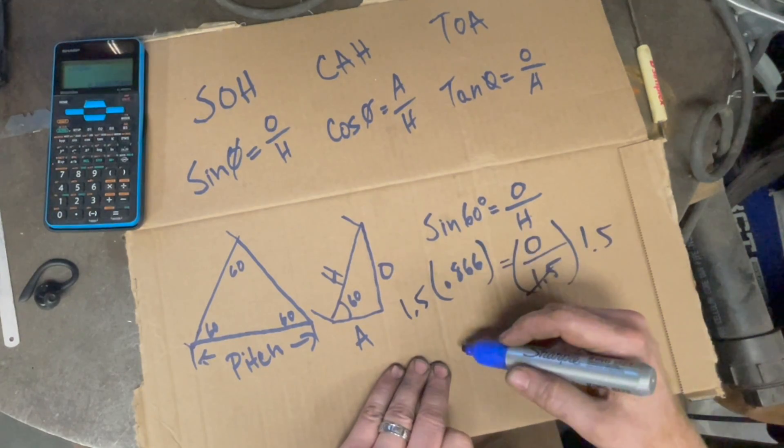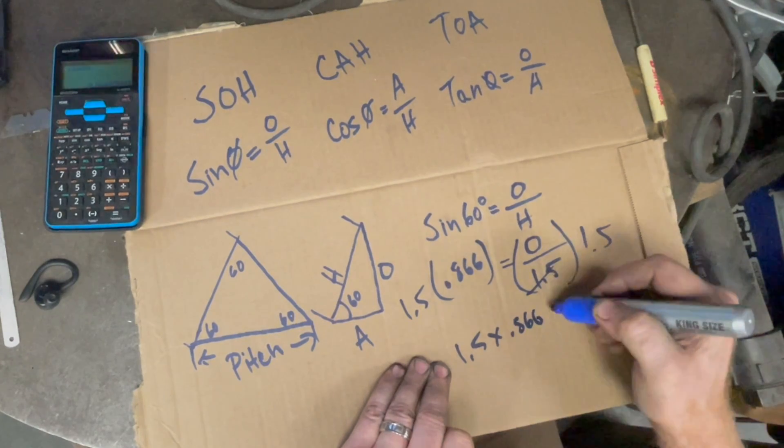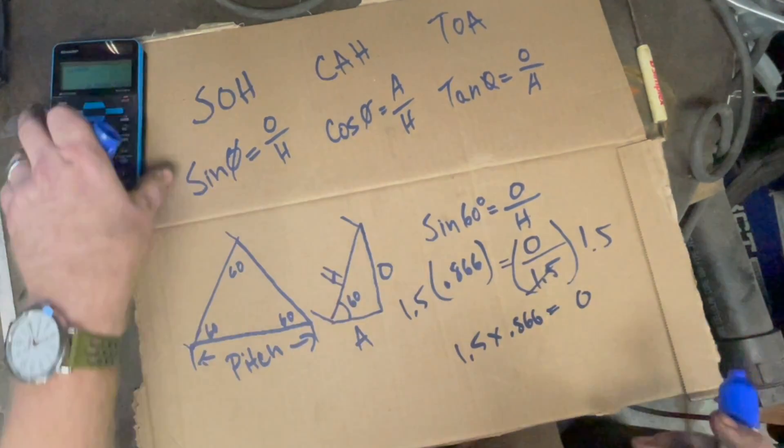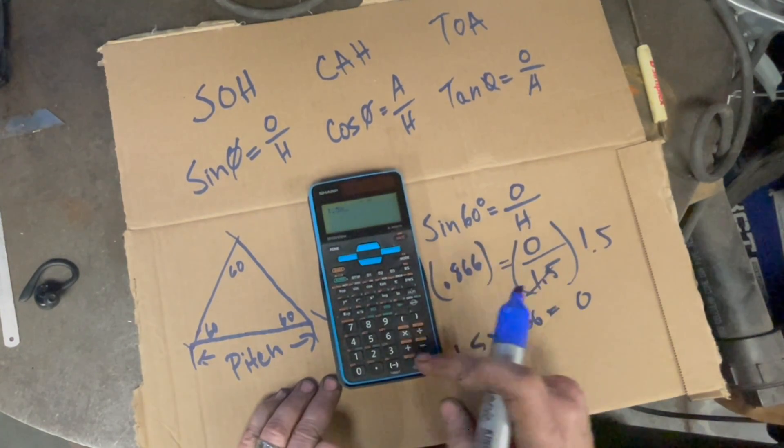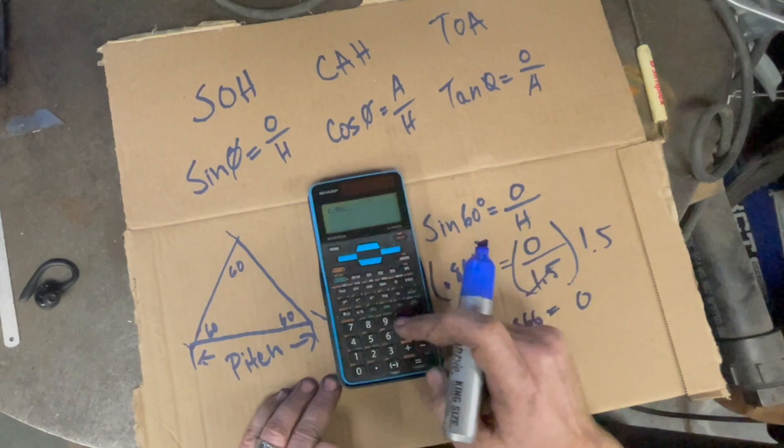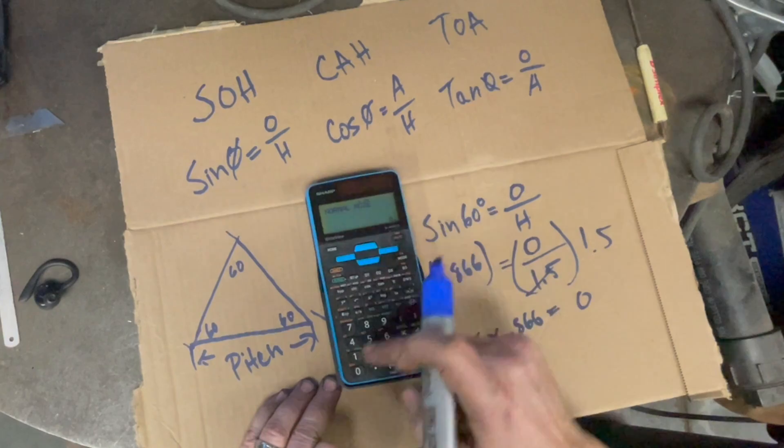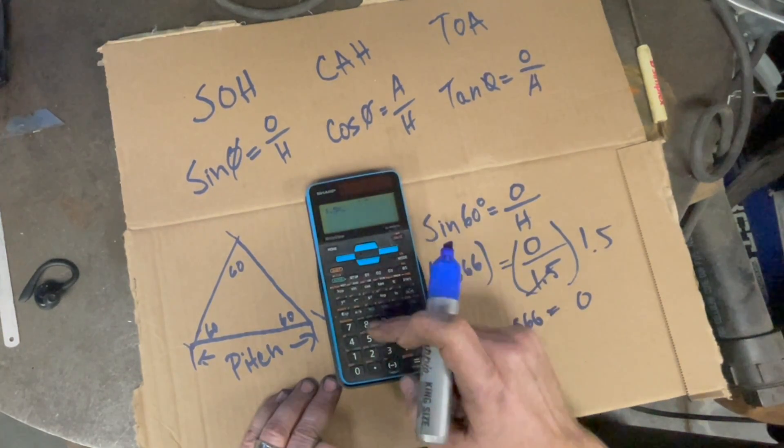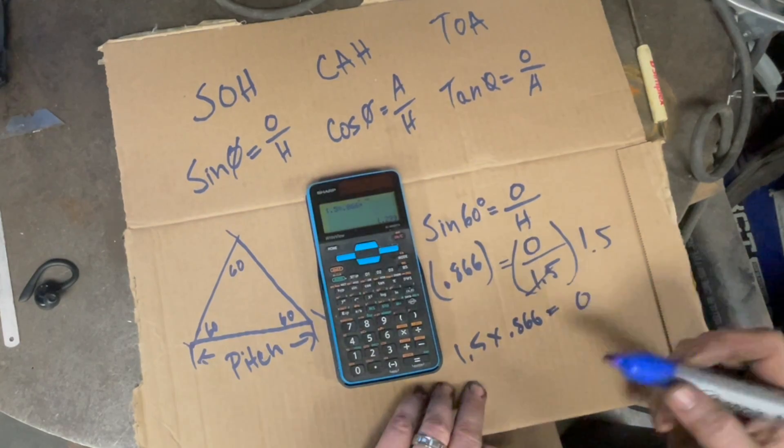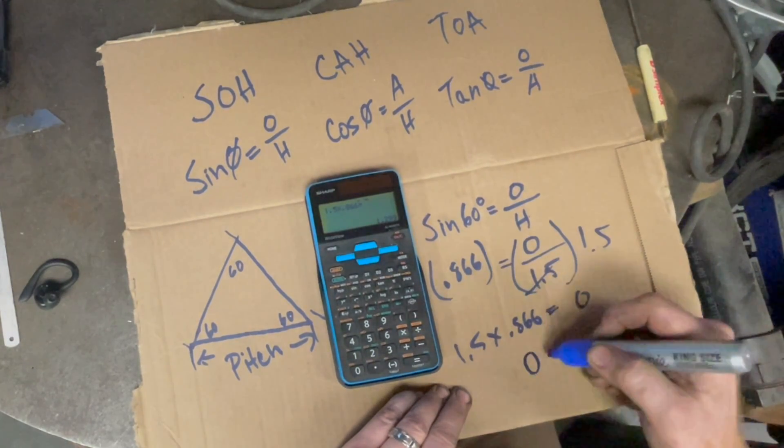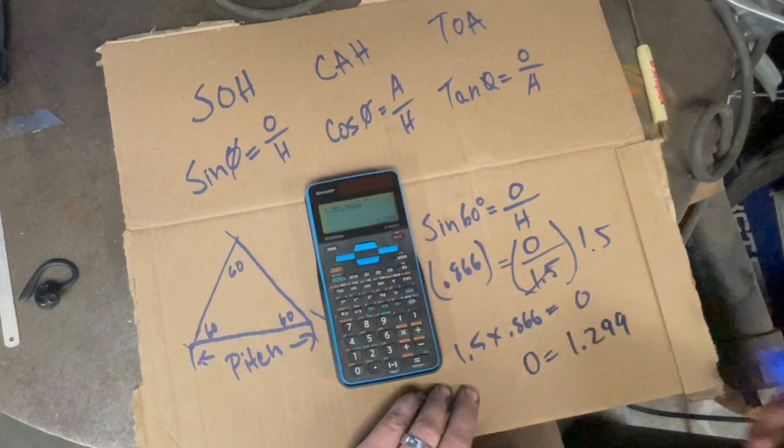And we'll get 1.5 multiplied by 0.866 equals O. And we'll type that into the calculator: 1.5 multiplied by 0.866, and we get the number 1.299. So our O equals 1.299.